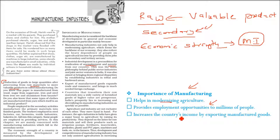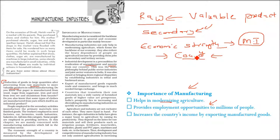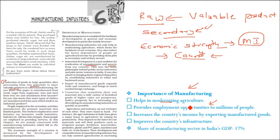Manufacturing improves the country's infrastructure. Countries that are transforming raw materials into finished goods are always prosperous. It improves the country's money, foreign exchange, and infrastructure. When we talk about agriculture, 60% of Indian people are involved directly or indirectly. Agriculture and industry are not exclusive — industry gives good products to agriculture like fertilizers, irrigation pumps, insecticides, pesticides, plastic, and PVC pipes. In return, agro-based industries get raw materials like crops from agriculture. Both are dependent on each other.